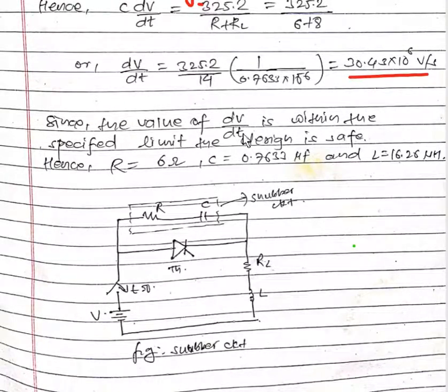Since the value of dV/dt is within the specified limit, the design is safe. We have R equals 6 ohms, C equals 0.7633 microfarads, and L equals 16.26 microhenry.